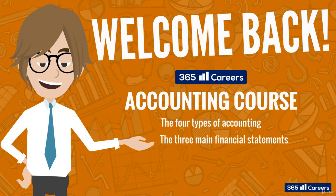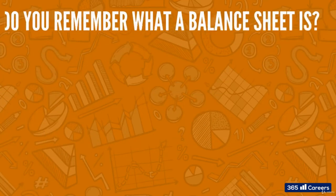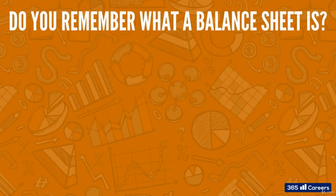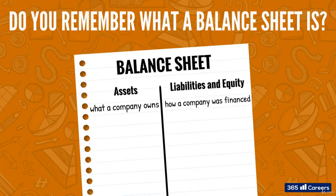Now is the time to look at the main accounting equation. Do you remember what a balance sheet is? A balance sheet shows what a company owns and owes at a specific point in time. On the left side are the company's assets, the things that it owns. On the right side are the company's liabilities and equity, showing how the company was financed.